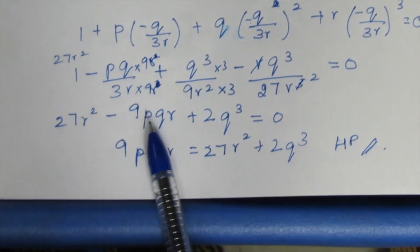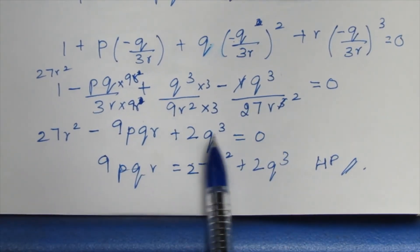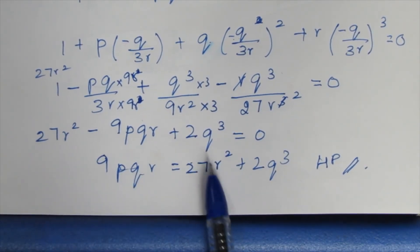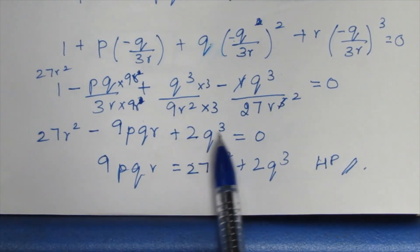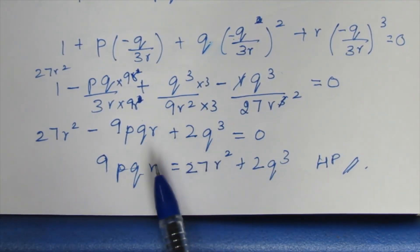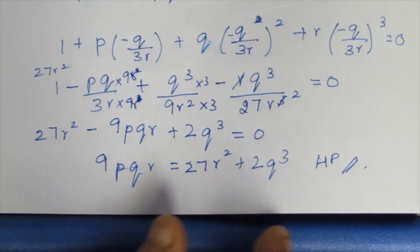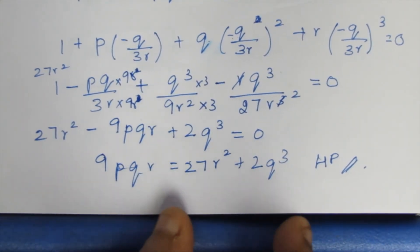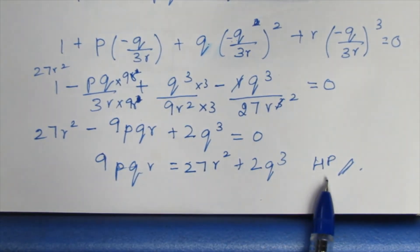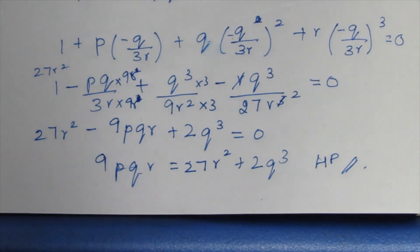Therefore, 9pqr = 27r² + 2q³, which is what we needed to prove. Hence proved. Thank you.